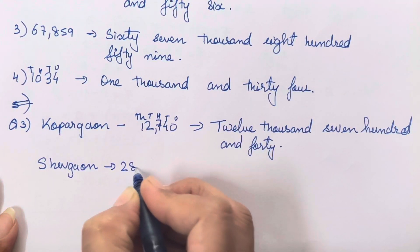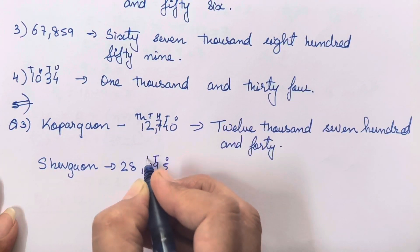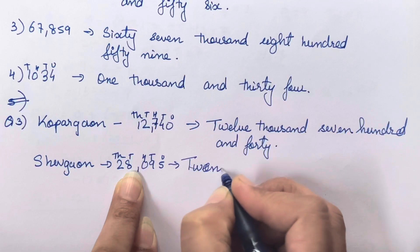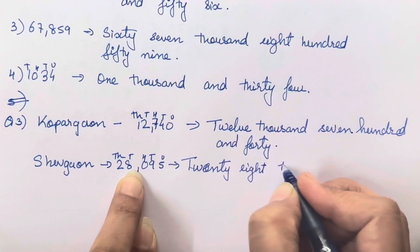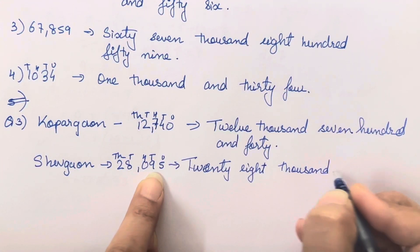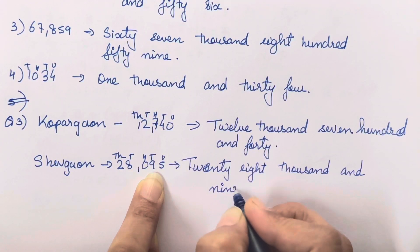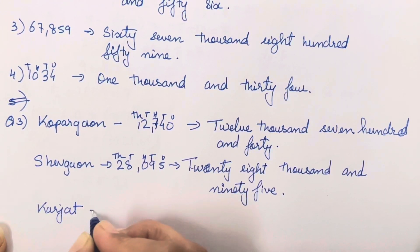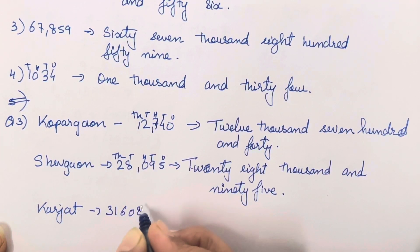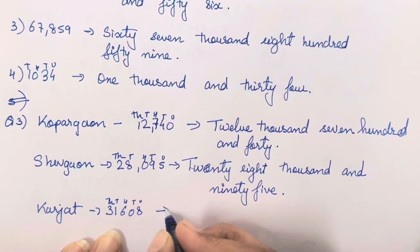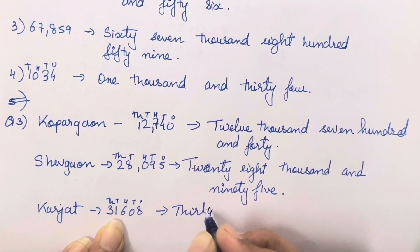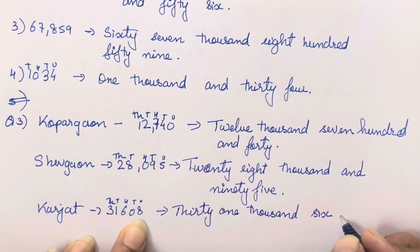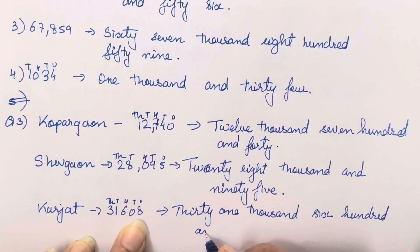Next was Shegao - you can refer to the textbook. Shegao's number is 28095 - unit, tens, hundred, thousand, ten thousand - so that is twenty-eight thousand and ninety-five. The third one, Khatgaon, is 331608 - unit, tens, hundred, thousand, ten thousand - so that is thirty-one thousand six hundred and eight.